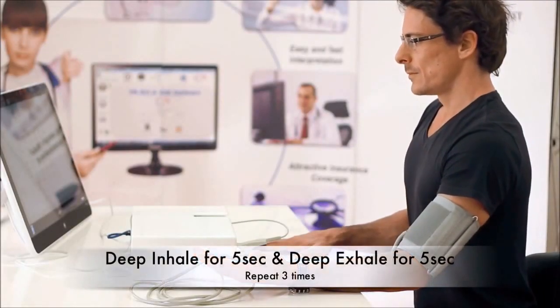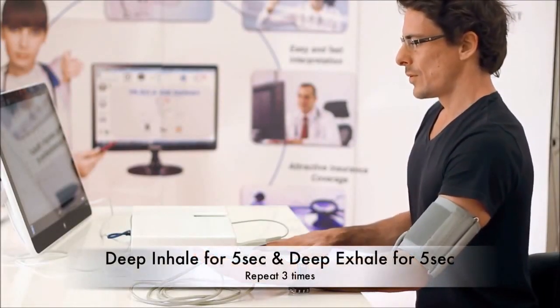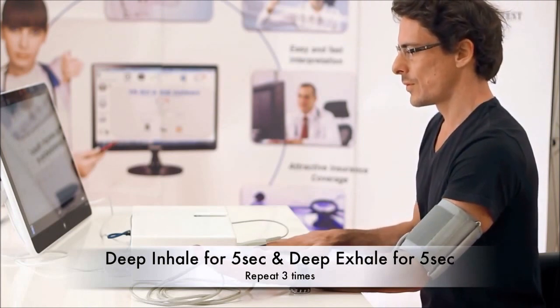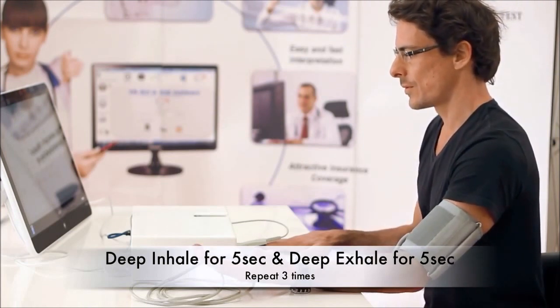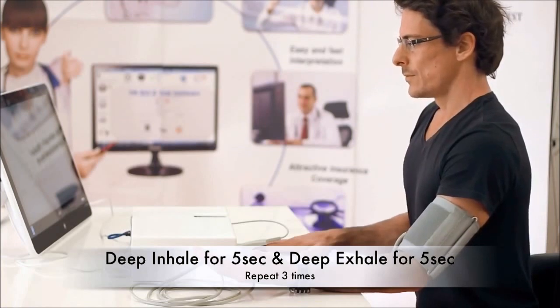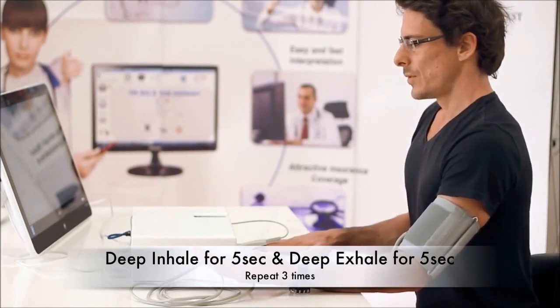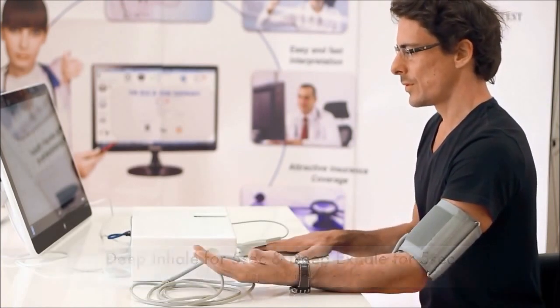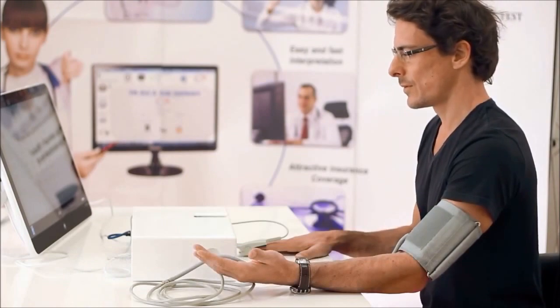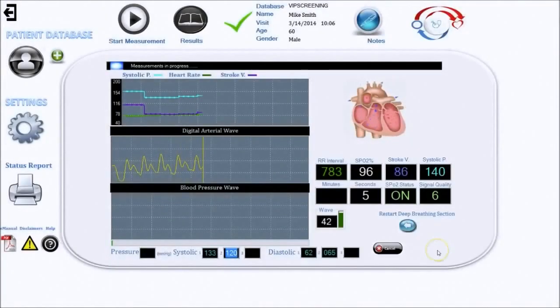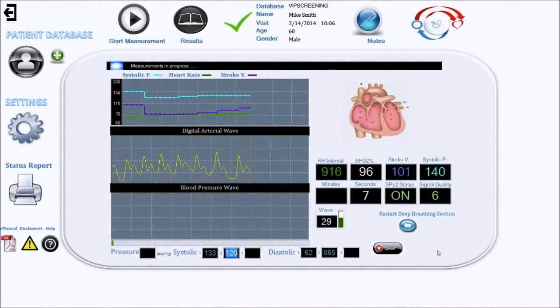It is time to explain to the patient how to perform the deep breathing procedure. Once the patient is ready, click start and using the software timer, have the patient adjust his breathing. Slowly inhale for 5 seconds, and exhale for 5 seconds. Repeat 3 times. Software is recording the change in heart rate during this procedure.